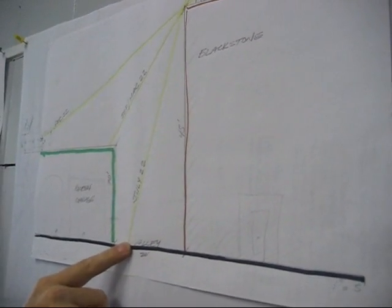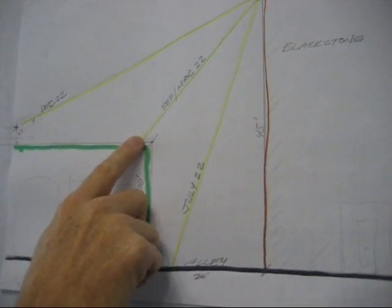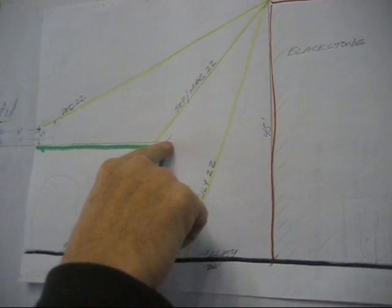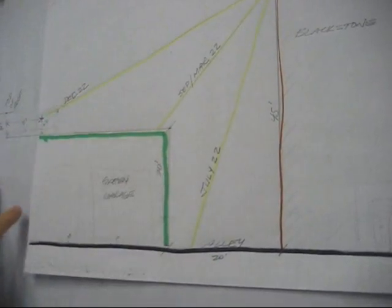In July, it'll be hitting essentially in the middle of the alley at noon. In September and March, it'll be on the upper edge of the building, and in December, it'll be shining about the middle of our roof.